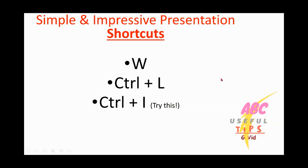Next shortcut is for highlighting. Sometimes you want to highlight certain words on the screen. What you can do is press Control and I at the same time, and your cursor will be turned into a yellow vertical line that you can use to highlight certain wordings.